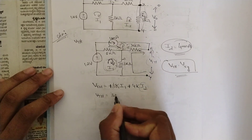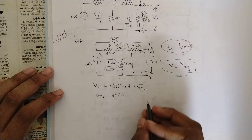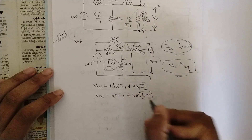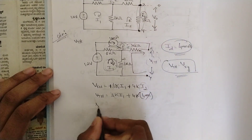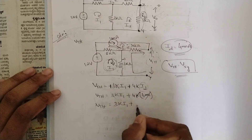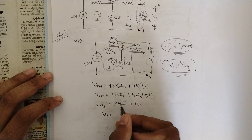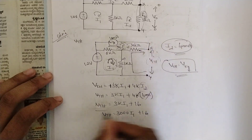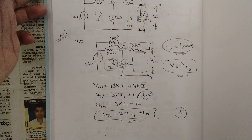Substituting: Vth = 3k·i1 + 4k × 4mA. Note that kilo and milli cancel each other (10³ and 10⁻³). So Vth = 3000·i1 + 16. Name this as equation 1. To find Vth we need to know the current i1.